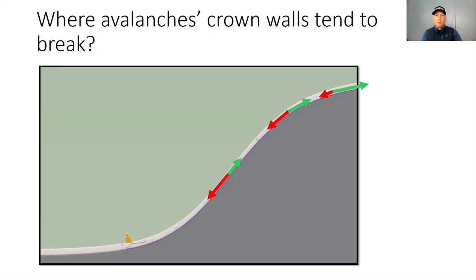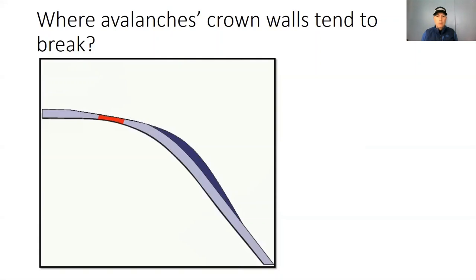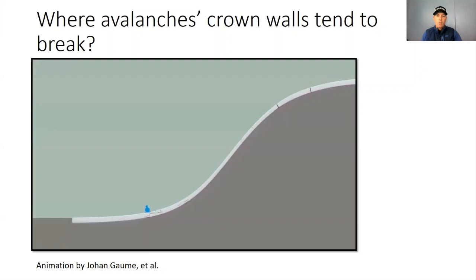The maximum tensile strength of the slab depends on the slab-bed surface friction. For persistent weak layers, it is about a 30-degree slope, with hard slab avalanches typically pulling deeper into the flats. Convexities by nature are more exposed to the wind than the slope above or below them. As a result, the wind tends to transport snow from the convexity roll into another section of the slope, leaving the slab on a convexity roll both thinner and weaker. Avalanche crown walls form above the slab tensile failure, where the friction exceeds the downslope gravitational force. We can see why crown walls typically end up on the convexity roll.